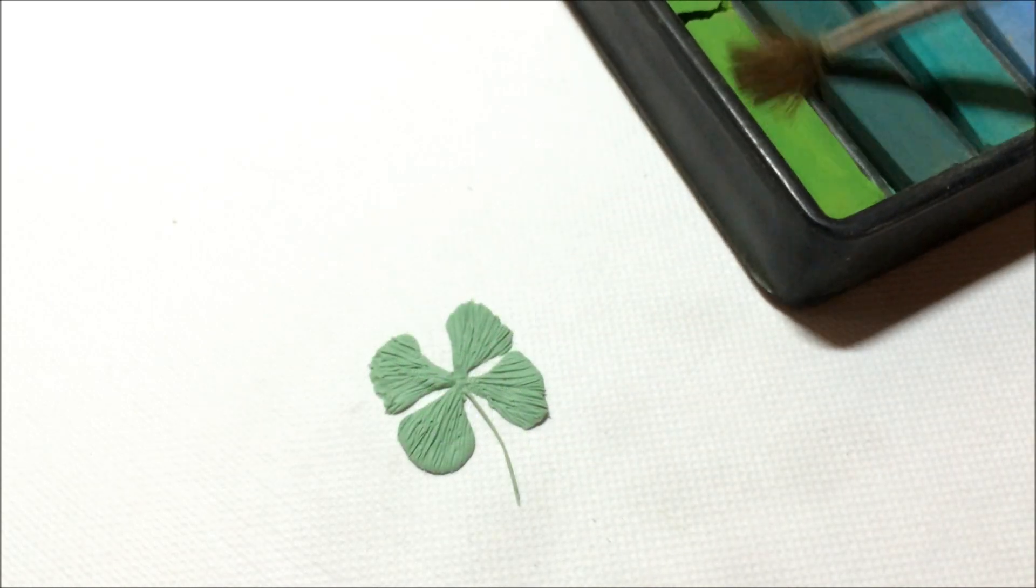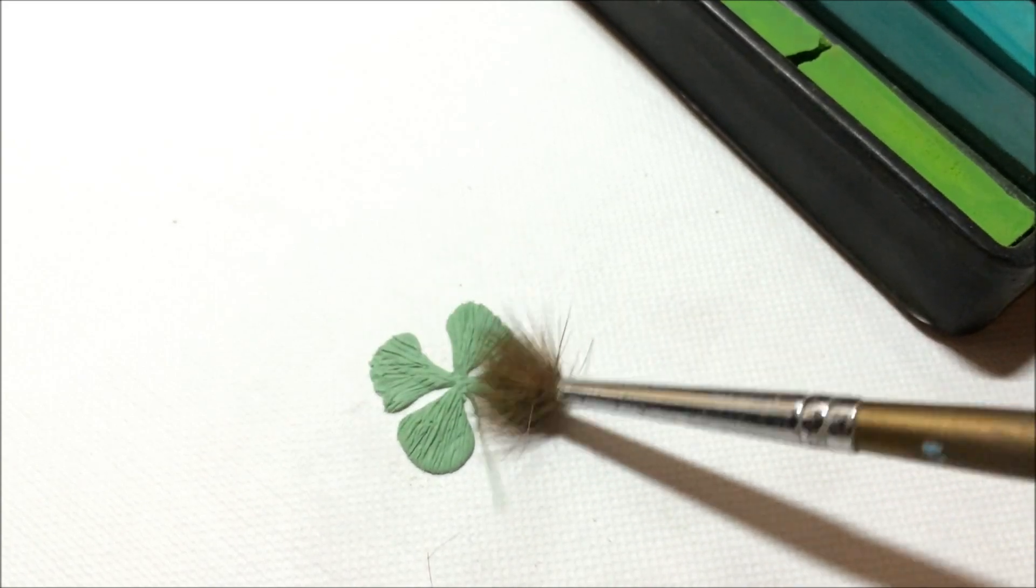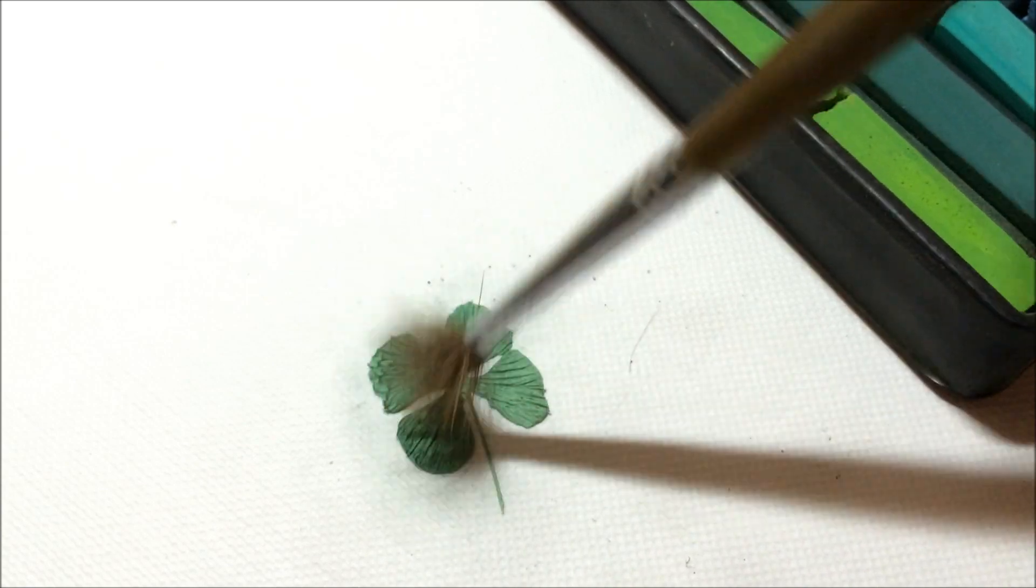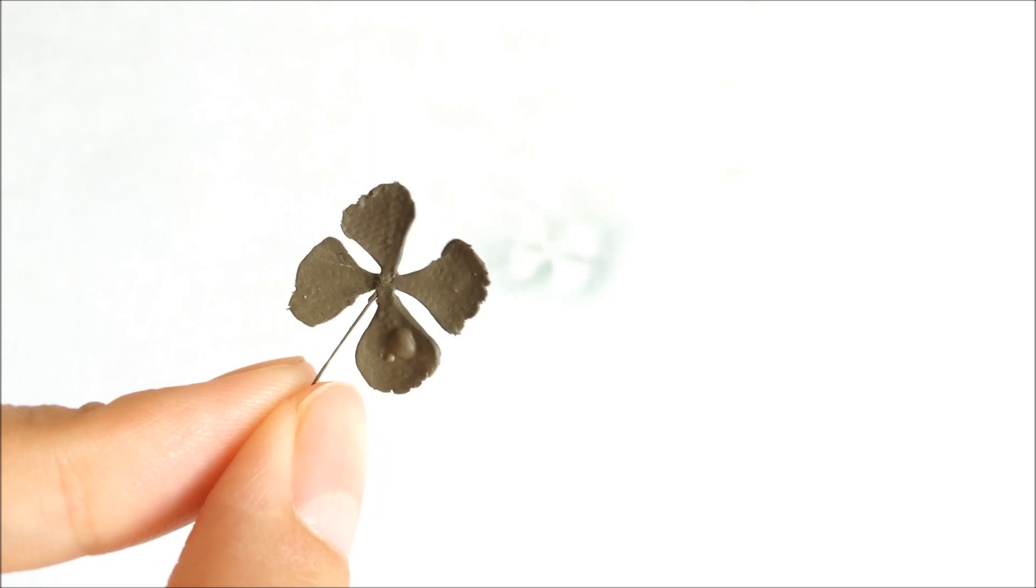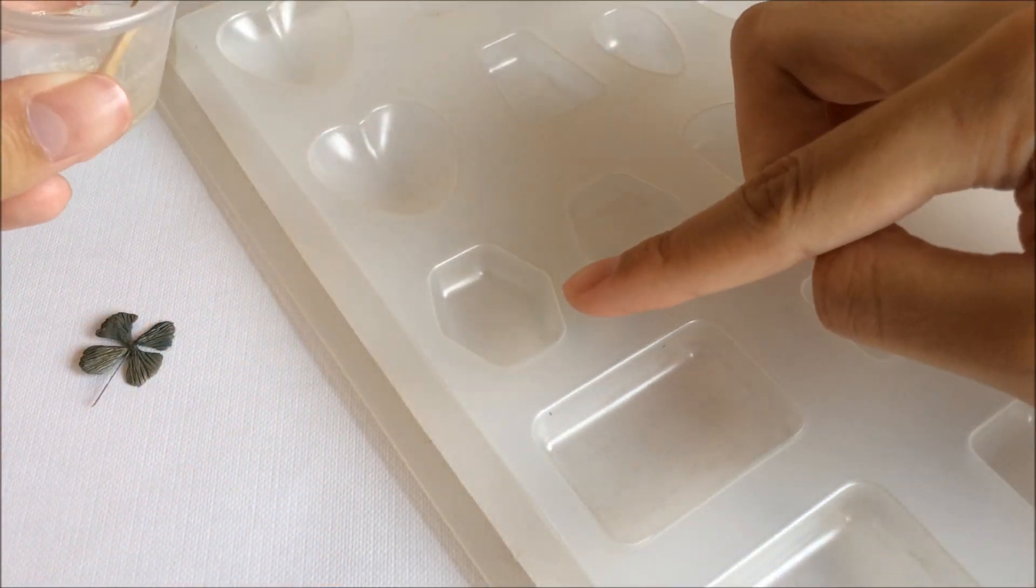Then shade them with some chalk pastel. I'm using light green and dark green for this. This is how it looks like. Go ahead and bake them and you'll get this result. Mine kind of overbaked, that's why it looks a little darker.